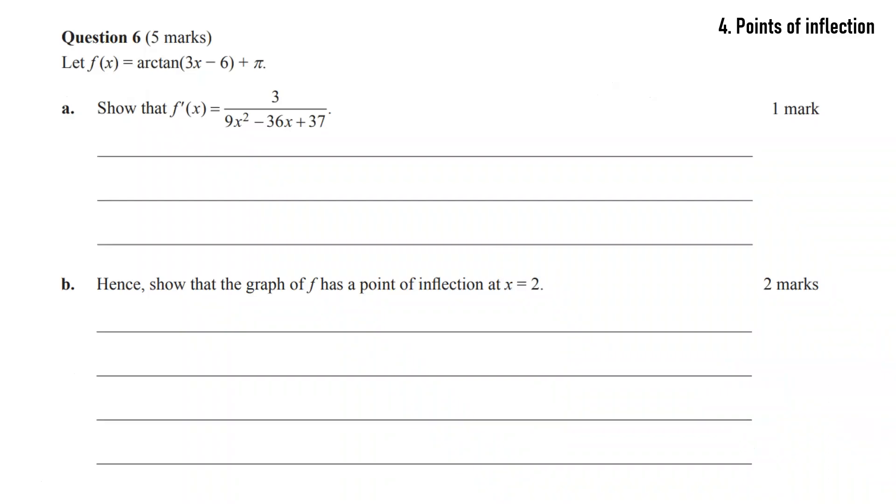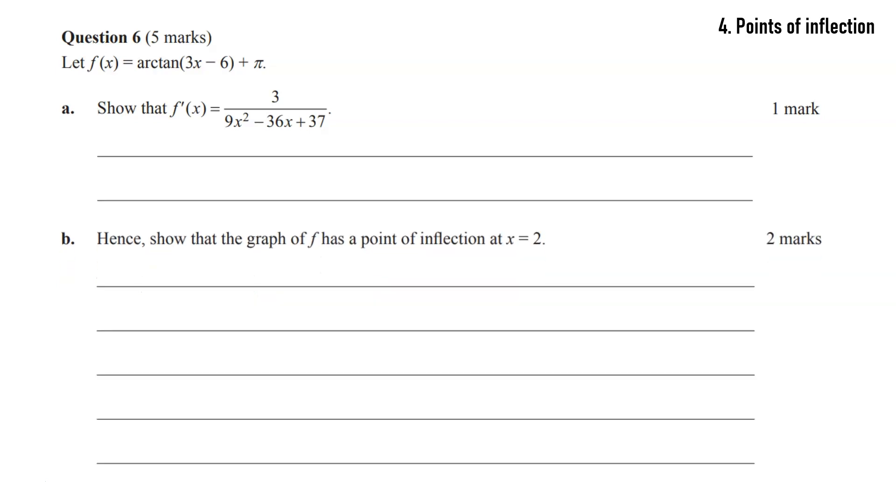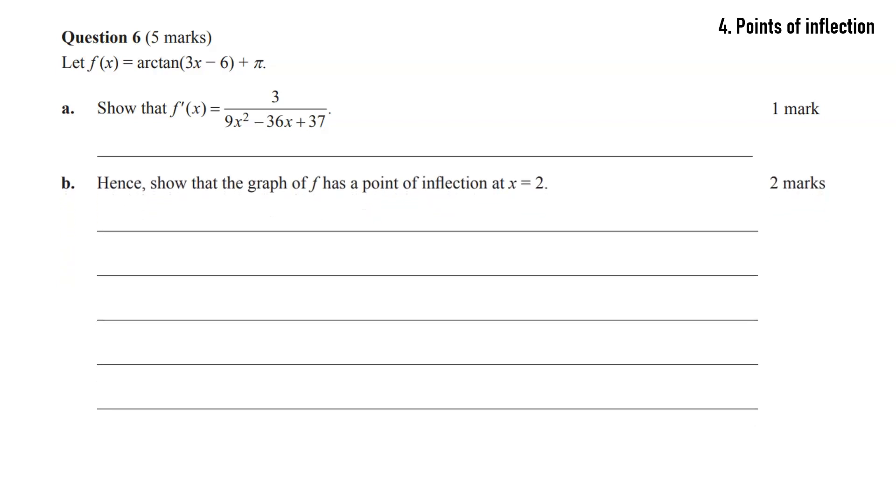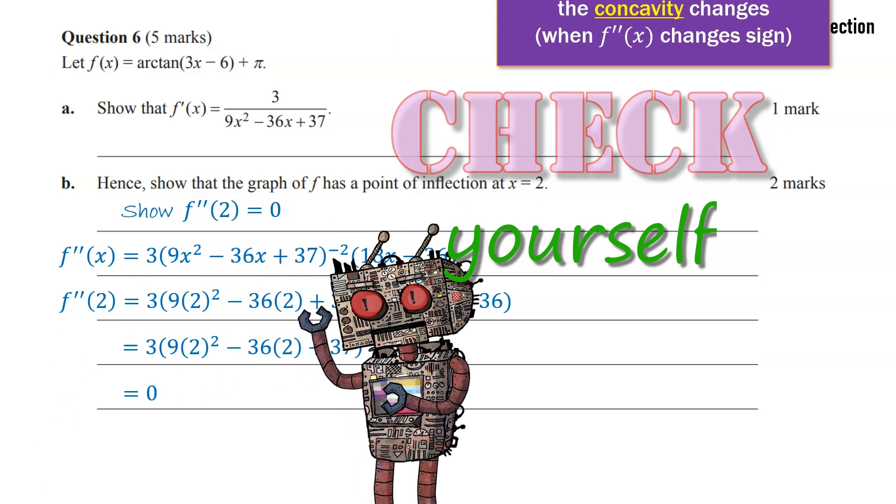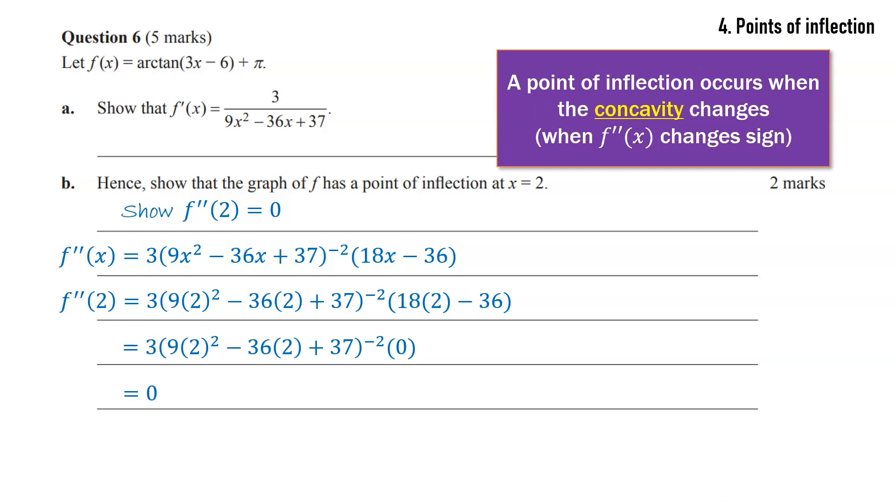This one is about points of inflection. This was an exam one question where students had to find a first derivative and then hence show that the graph of f has a point of inflection at x equals 2. The most common error was to try to show that the second derivative at 2 was 0. So finding the second derivative using the chain rule, subbing in 2, yes it is 0, but it's not enough, right? The second derivative not only has to be 0, but it has to change sign. So here a student would have had to show that to the left of that point x equals 2, the second derivative was negative and then to the right it changed to positive.